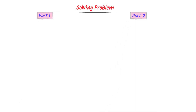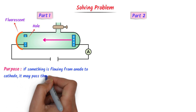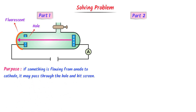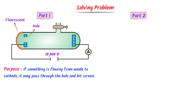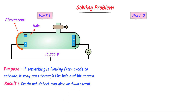We will solve this problem in two parts. In the first part, we take the discharge tube, create a small hole in the cathode, and coat the back side of the cathode with a fluorescent or zinc sulfide screen. The purpose is simple: if something is flowing from anode towards cathode, it may pass through this hole and hit the fluorescent screen, producing a glow. We provide high voltage — the ammeter shows continuous deflection, meaning current is passing through the circuit. But the result is nothing; we do not detect any glow on the fluorescent screen. Hence we conclude that the unknown thing is not flowing from anode towards cathode — this assumption has failed.